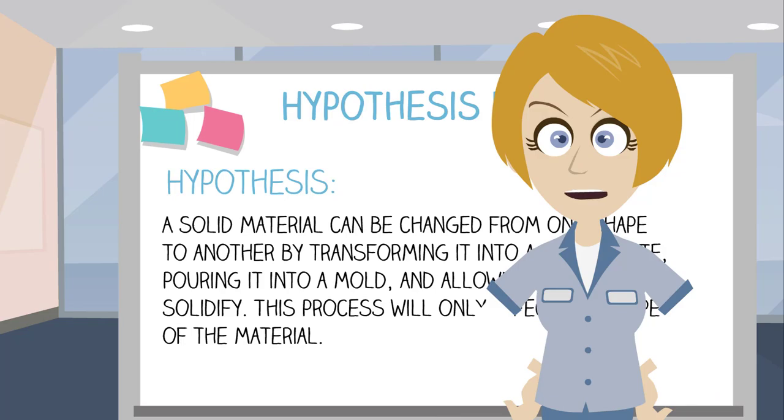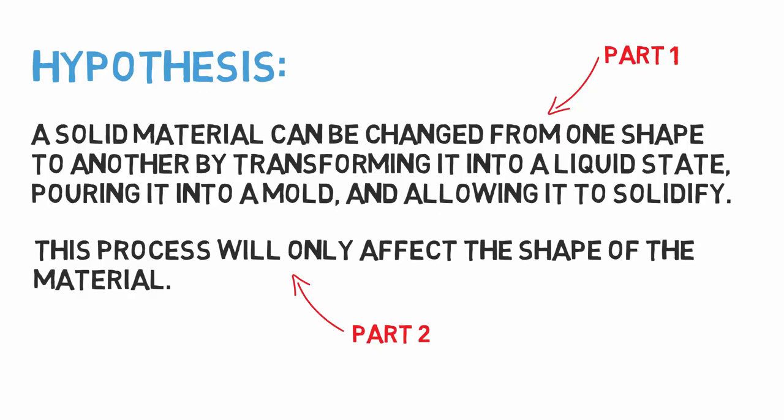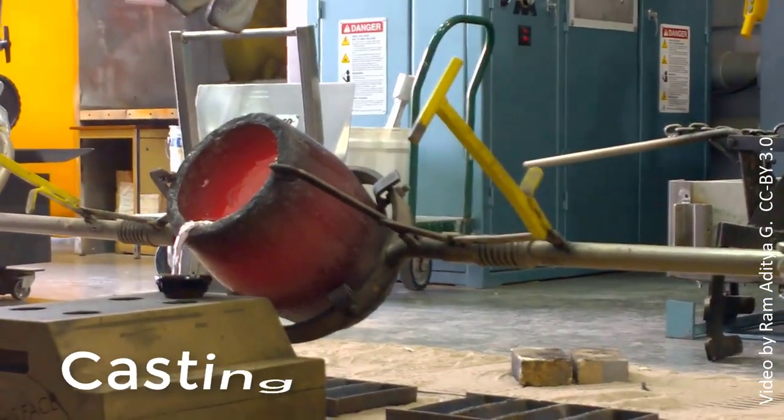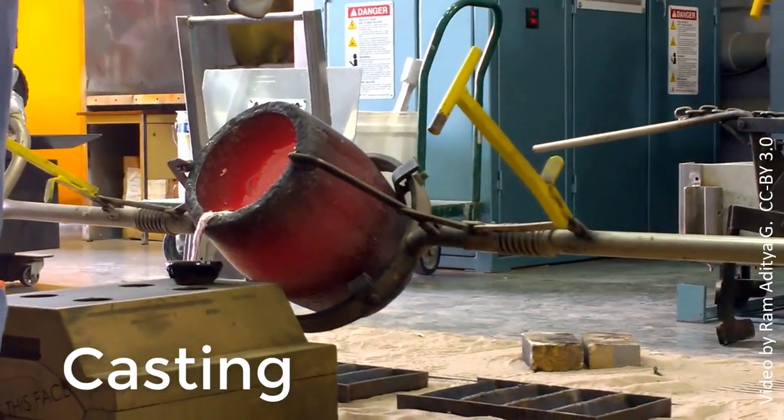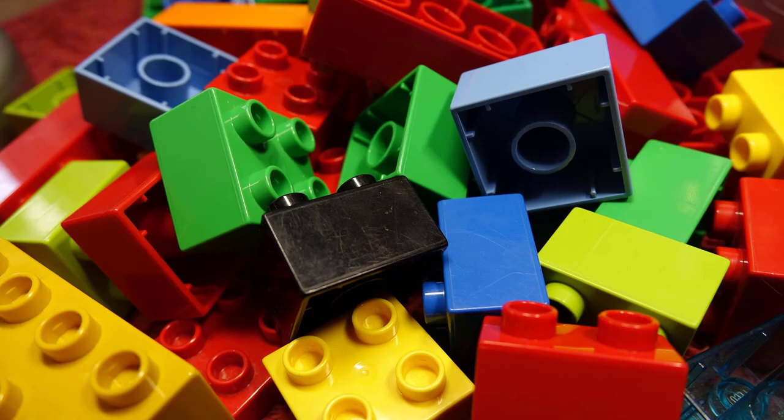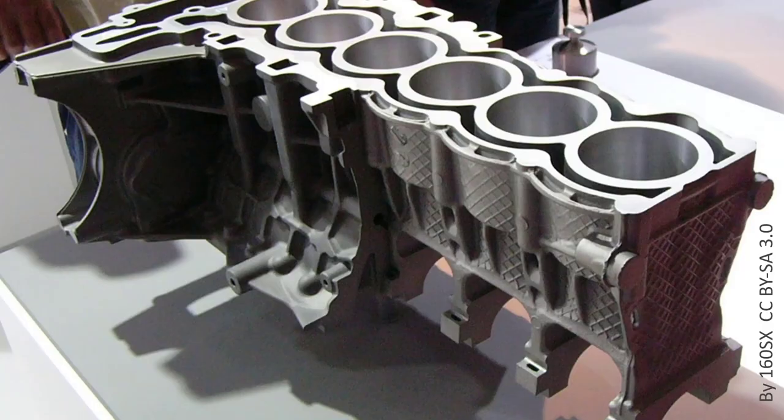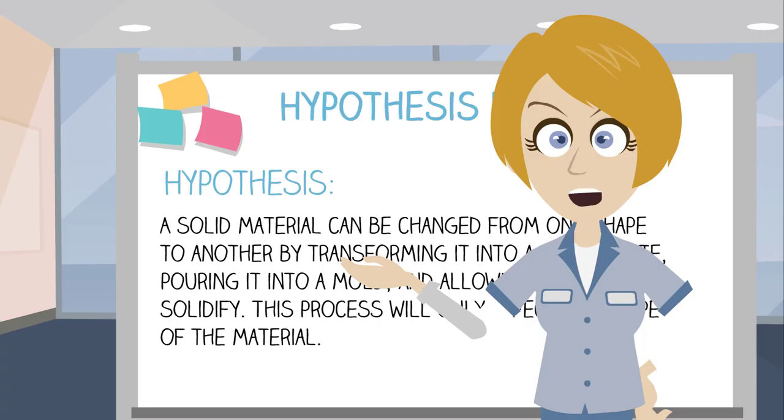So now what can we conclude from our experiment? The first part of our hypothesis was proved correct. We demonstrated that a material can be reshaped by melting it, using a mold to form a new shape. In engineering, this process is known as casting, and it's used to form many different structures, from simple toy building blocks to complex engine components. It's quite a convenient process for making complicated structural shapes.